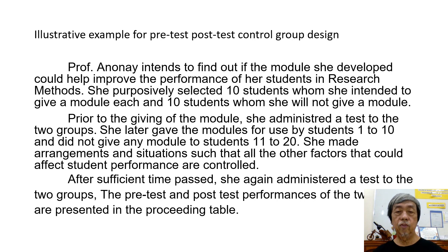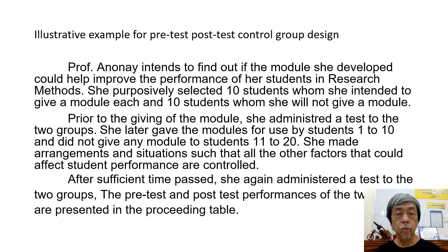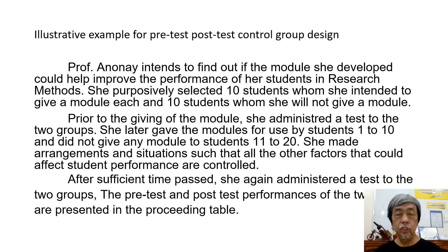This is the illustrative example for pre-test, post-test control group design. Professor Anonai intends to find out if the module she developed could help improve the performance of her students in research methods. She purposefully selected 10 students to give a module each, and 10 students whom she will not give a module. Prior to giving the module, she administered a test to the two groups, later gave modules to students 1 to 10, and did not give any module to students 11 to 20, controlling all other factors that could affect student performance.